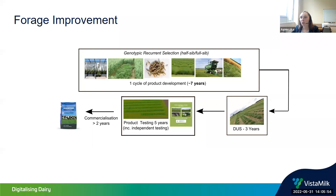The first and most important stage of the process is one cycle of product development called genotypic recurrent selection. This takes around seven years in our case, after which we move on to the phases of testing of our new cultivar that might get commercialized in the end.